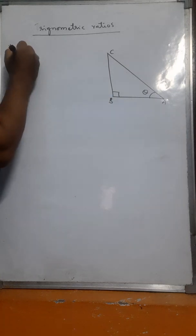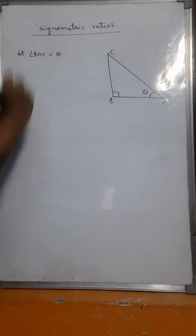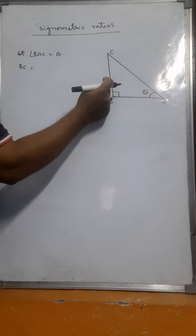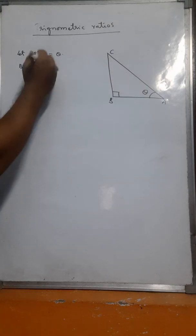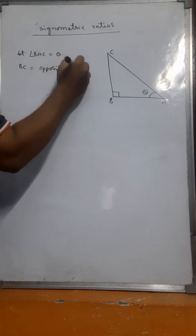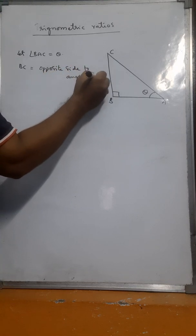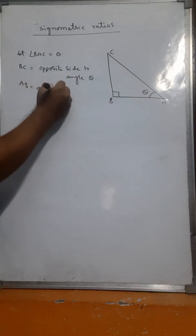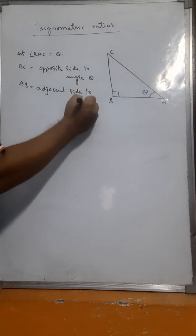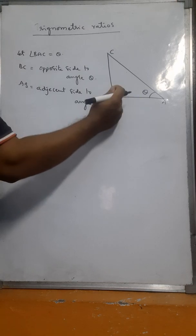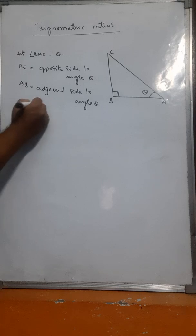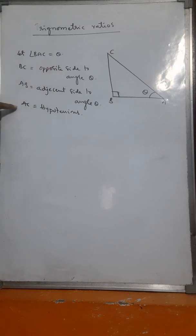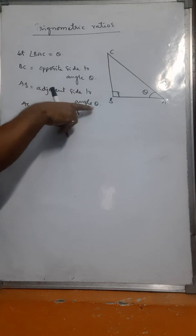Let angle BAC equal to theta. Then BC is the opposite side to angle theta, AB is the adjacent side to angle theta, and AC — the side opposite the 90 degree angle — is called the hypotenuse.